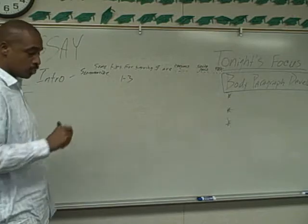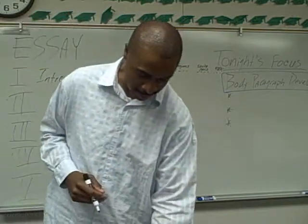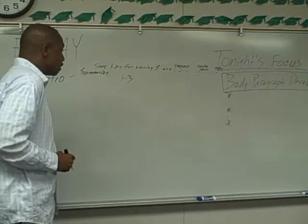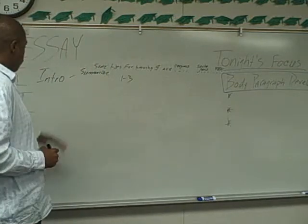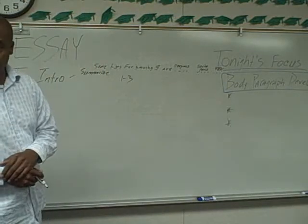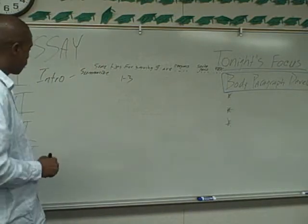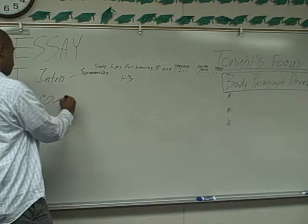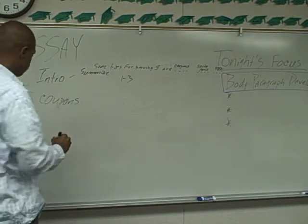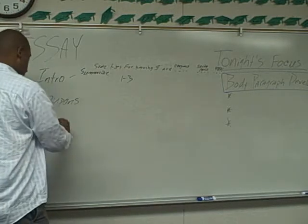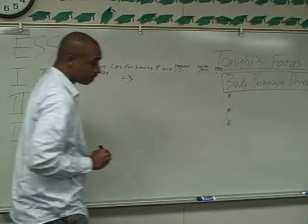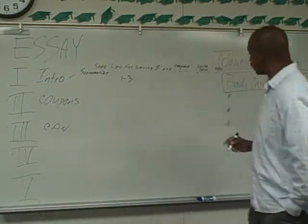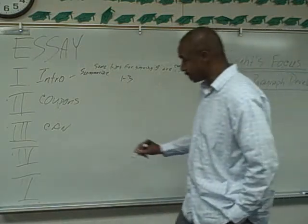They know you understand what this essay writing exercise is about. So what do you think our first body paragraph is going to be about? Coupons. What about the second one? Cans. And the third one? The 401k — right.